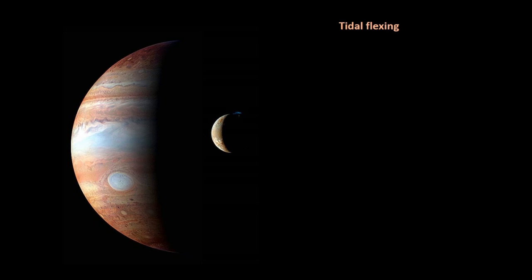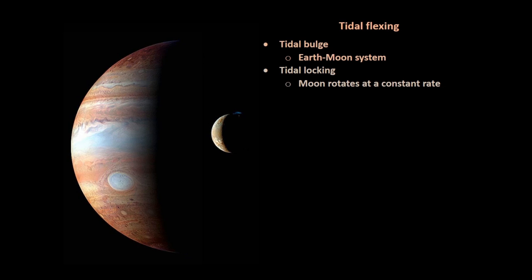We'll start by talking about the tidal bulge and how the tidal bulge is formed. We'll use the Earth-Moon system as an example. When the bulge is locked in place on the moon, we call that tidal locking, and what it does is it makes the moon rotate at a constant rate as it orbits the Earth.